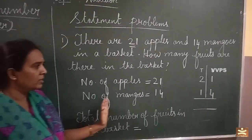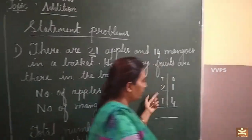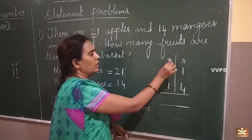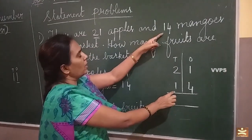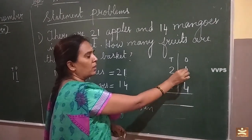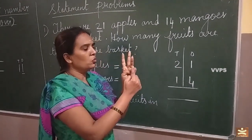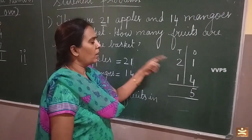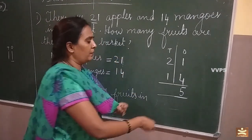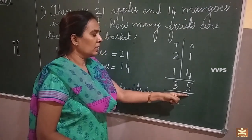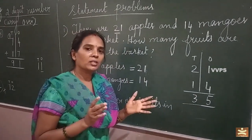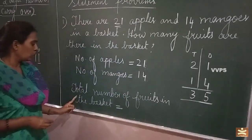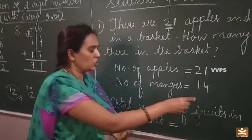So how will you add that? Same way children. This is 21 apples and 14 mangoes. Write like this: one's place and ten's place. Same way: one in the mind, four on the fingers. After one: two, three, four, five. Write the answer five. And two in the mind, one on the fingers. After two: three. So you have got the answer 35. Totally, apples and mangoes together will have 35 fruits. Total number of fruits in the basket equals 35.